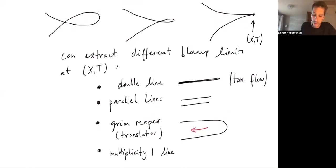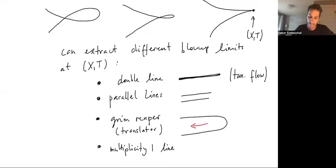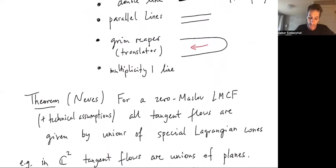And you can do other things too, like just take some points like here, and then just rescale by even bigger quantities than we did before. So you just scale everything else away, and then the limit will be a multiplicity one line. The hope is that if you understand all possible blow up limits, then that should give you a pretty good geometric picture of how the singularity is forming.